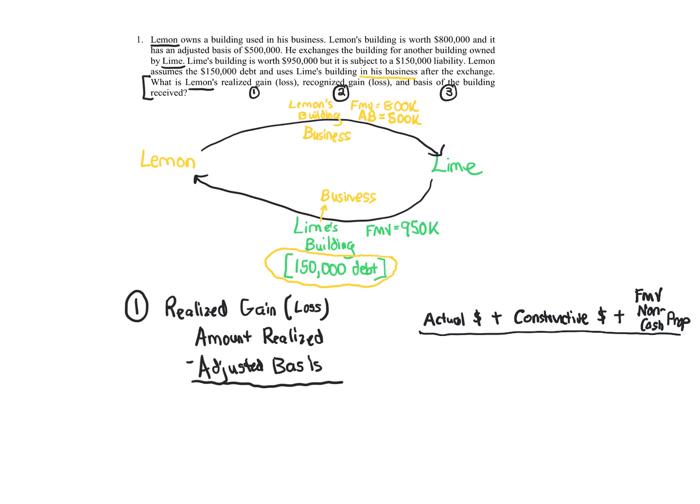We're not focusing on character in this problem — just up to recognized gain or loss. We start with realized gain or loss: amount realized minus adjusted basis. Amount realized is actual cash received, plus constructive cash (also known as liability relief), plus the fair market value of non-cash property. Is Lemon getting any actual cash? No. Any liability relief or constructive cash? No — there's no liability on Lemon's own building. What about fair market value of non-cash property? Yes — Lemon is getting Lime's building, which has a value of $950,000. So Lemon's amount realized is $950,000.